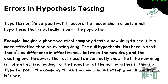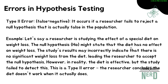Type I error — also called a false positive — is like saying a performance is mind-blowing when it's actually just average. In research, it means you're rejecting a null hypothesis when you actually shouldn't. For example: a pharmaceutical company tests a new drug to see if it's more effective than an existing one. The null hypothesis states there is no difference in effectiveness. However, the test result incorrectly shows the new drug is more effective, leading to rejection of the null hypothesis. This is a Type I error — the company thinks the new drug is better when in reality it's not.